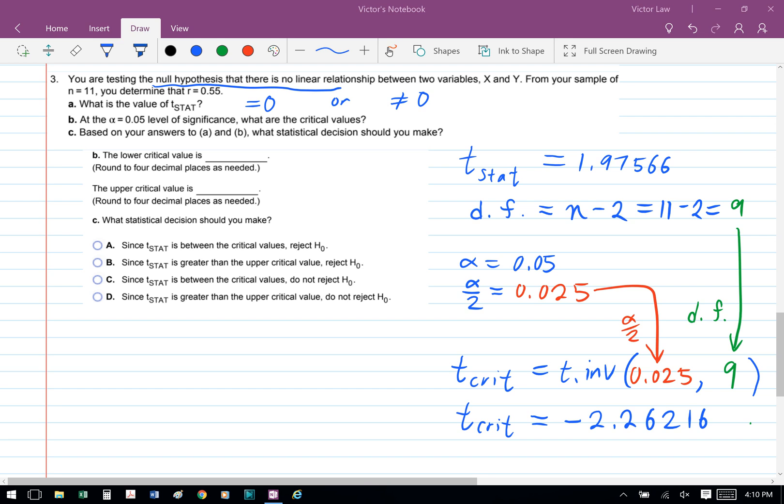And we plug that into Excel. We're going to get t critical equals negative 2.26216.